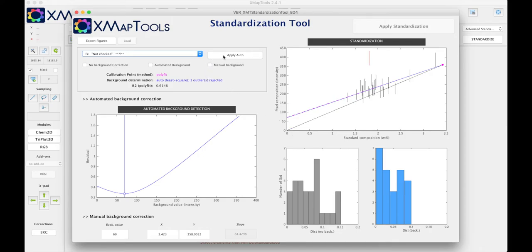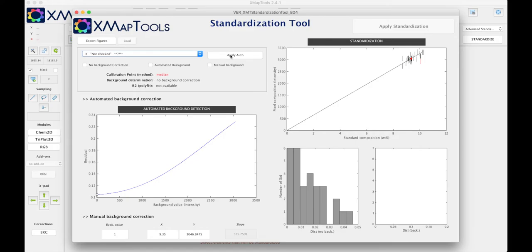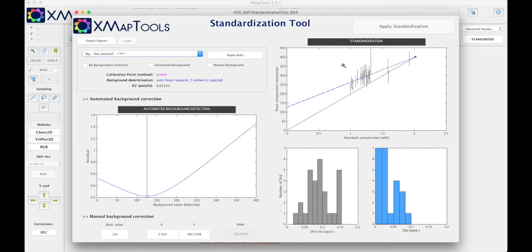For iron I just press apply auto because the program correctly detected the trend in the spot analysis. For potassium there is no need for background corrections, we can just press apply auto. Same for magnesium, there is a background correction but the program was able to find the trend nicely.